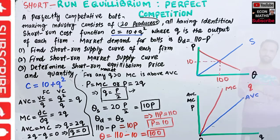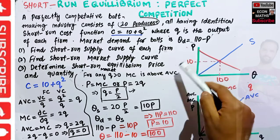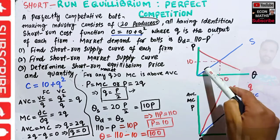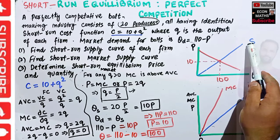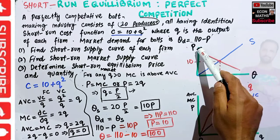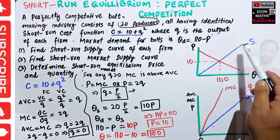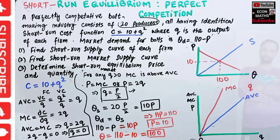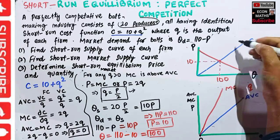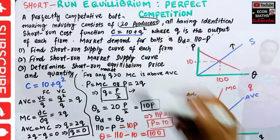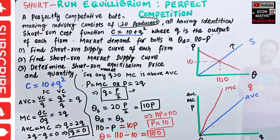The short-run equilibrium occurs where the market demand curve intersects the market supply curve, and we know this market supply curve is the summation of the 20 firms' short-run supply curves. I hope I made myself clear in this video. Thank you.